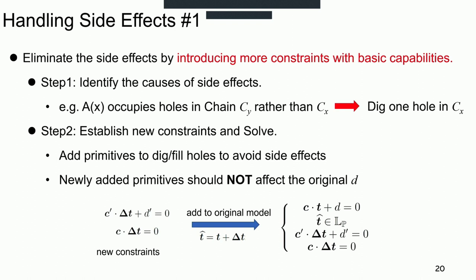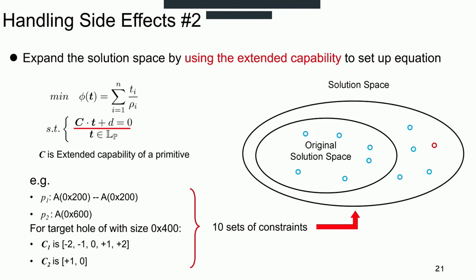In some cases, the first method based on basic capability is incapable of finding a solution, since adding more constraints could make it unsolvable. Besides, if we want to place the target object into a larger target hole, the basic capability cannot achieve that. In this case, we extend the capability to handle the side effects.